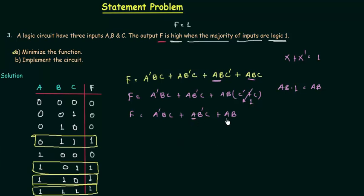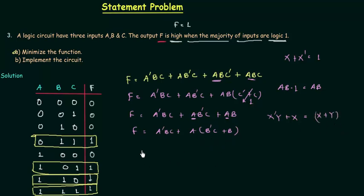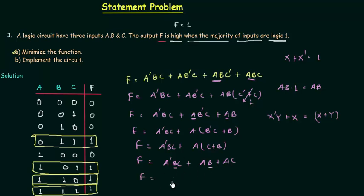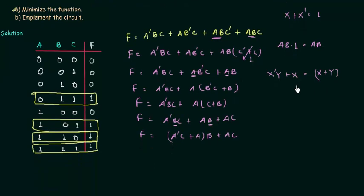Now we take a common from the last two terms, giving a(b'c + b). Using the distributive law — x'y + x = x + y — this simplifies to a(c + b), which expands to ab + ac. Taking b common from the first two terms gives b(a'c + a), and applying the same distributive law yields b(c + a). Finally, the minimized function is f = ab + ac + bc.